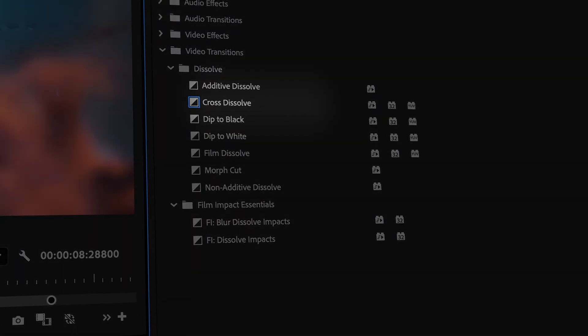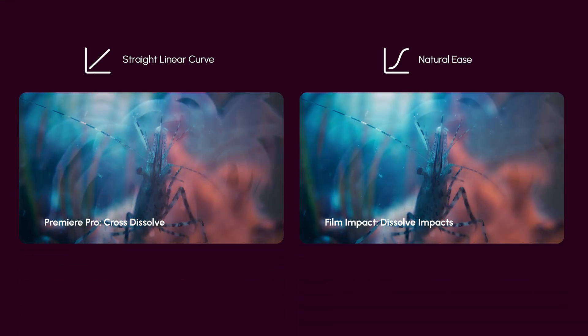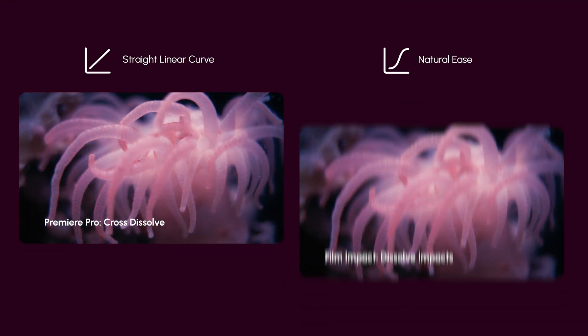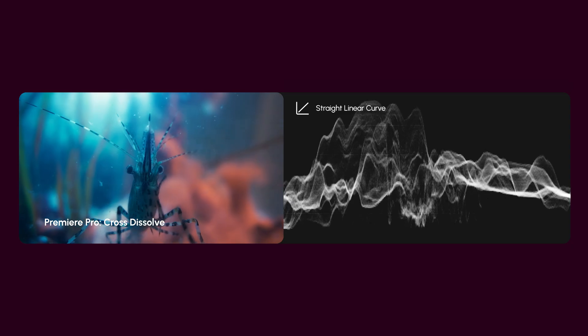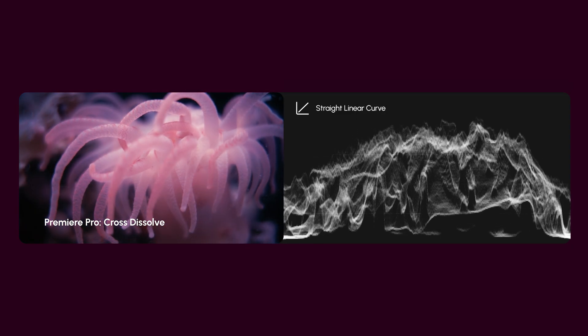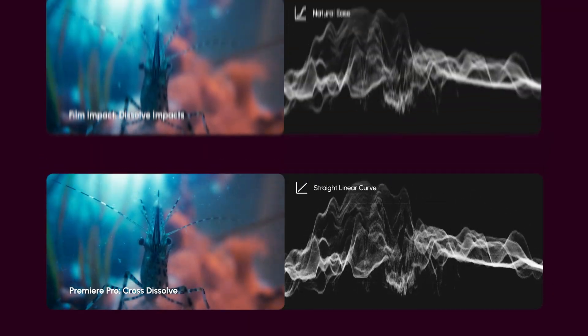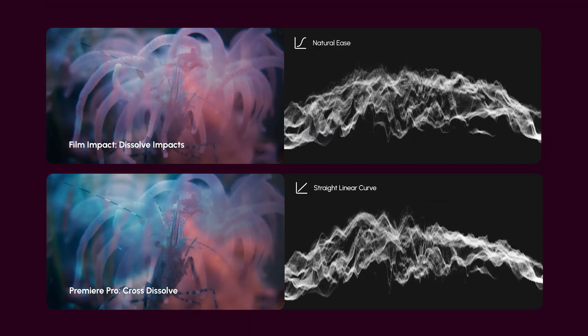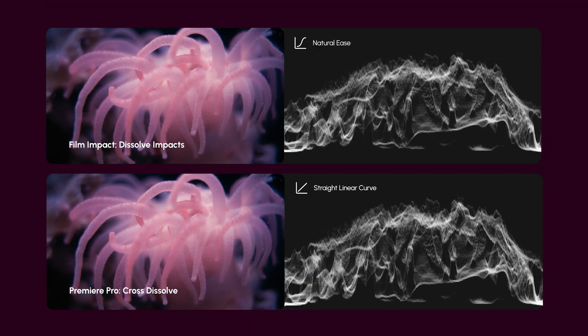Of course, you know that Premiere Pro comes with its own cross-dissolve, but there's a noticeable difference. Let's see what the built-in cross-dissolve looks like compared to the Film Impact Dissolve. I have them here side by side and open up the Lumetri scope to see what's happening. As you can see, throughout the transition, the cross-dissolve transitions linearly, instead of our dissolve, which has a natural ease.